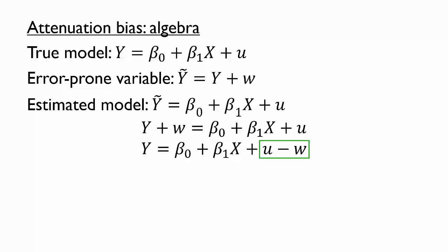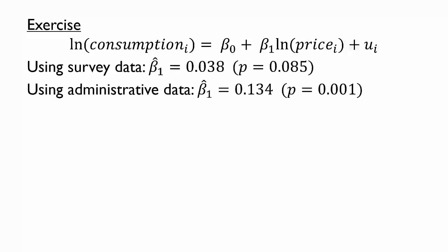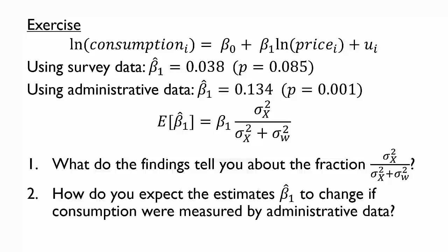Let's now try an exercise by returning to the example we started with, where researchers regress the natural log of a household's consumption on the natural log of the house price. Researchers got two different estimates of beta 1 depending on whether they used survey data or administrative data for house prices. Assuming the difference is due to classical measurement error, use the attenuation bias formula to answer the following two questions: first, what do the findings tell you about the fraction involving sigma x squared and sigma w squared in the formula? Second, how do you expect the estimates of beta 1 to change if consumption were measured by administrative data instead of a survey?